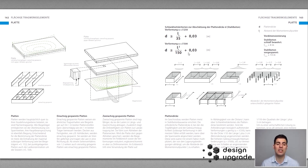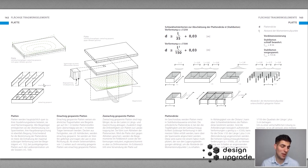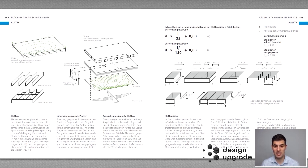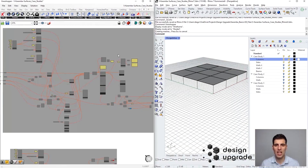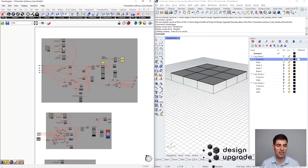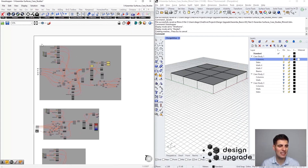You can take a look at the formula used to estimate the thickness of a slab system. What we are going to do with Karamba is to analyze what difference it makes between one-way and two-way slabs, and what strategies we have in order to design our slab structure so that we don't need to increase its thickness too much.